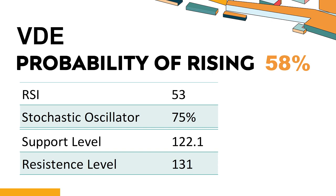VDE's short-term support level is 123.9. If it falls below this level during the session, it will have a chance to test 122.1. VDE's short-term resistance level is 129.8. If it breaks through this level during the session, it will look up to 131.